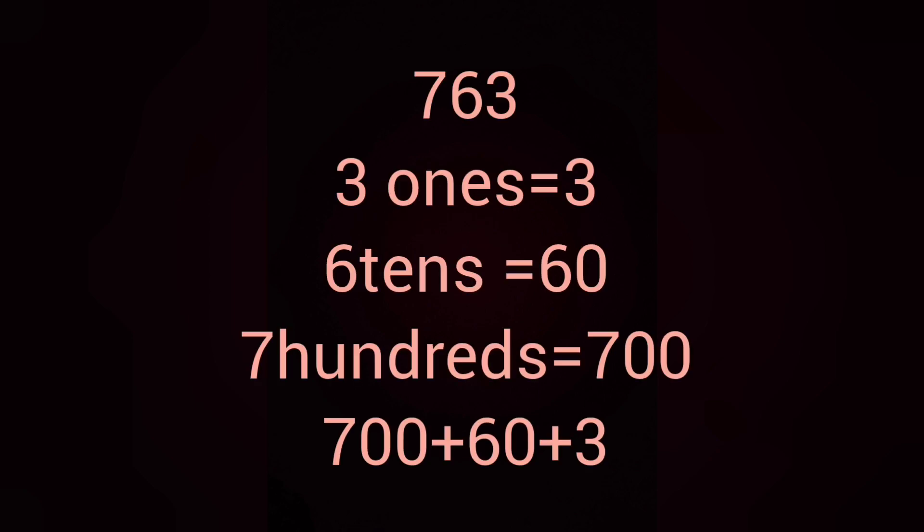Next, we will write the expanded form of 763. What is the place value of 3? 3 ones. What is the place value of 6? 6 tens. What is the place value of 7? 7 hundreds. 3 ones means just 3; 6 tens means 60; 7 hundreds means 700. So when we expand 763, it will be 700 plus 60 plus 3.